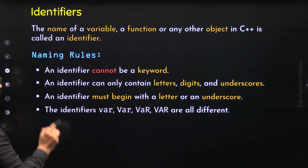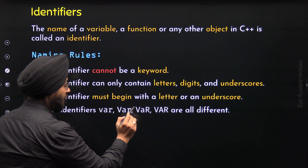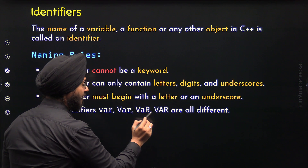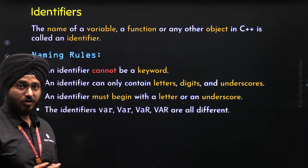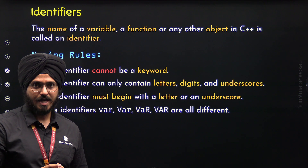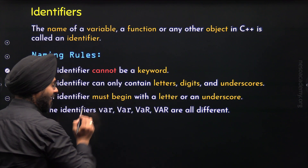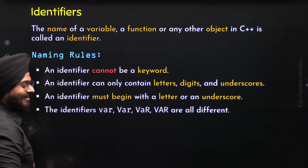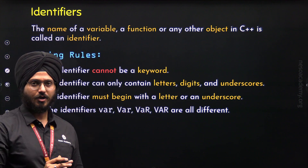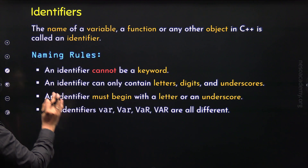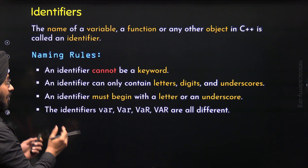Rule number 4 is that C++ is case-sensitive. For example, the identifiers 'where' with all lowercase letters, 'Where' with uppercase W, 'WHere' with uppercase W and H, and 'WHERE' with all uppercase letters are all different Identifiers. This means small V and capital V are not the same, small A and capital A are not the same. So you must name your entities very carefully while naming your variables.